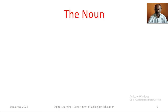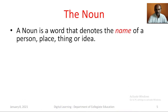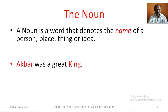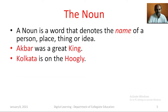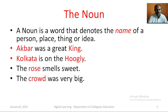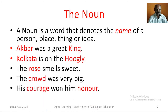The Noun. A noun is a word that denotes the name of a person, place, thing, or idea. For example: Akbar was a great king. Kolkata is on the Hoogli. The rose smells sweet. The crowd was very big. His courage won him honor. Here, Akbar, king, Kolkata, Hoogli, rose, crowd, courage, and honor — these are all nouns.